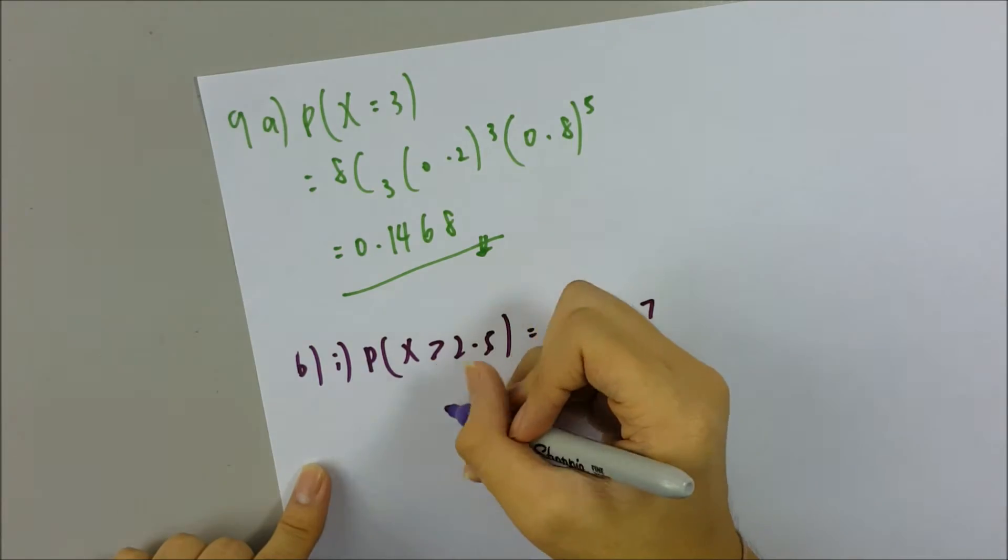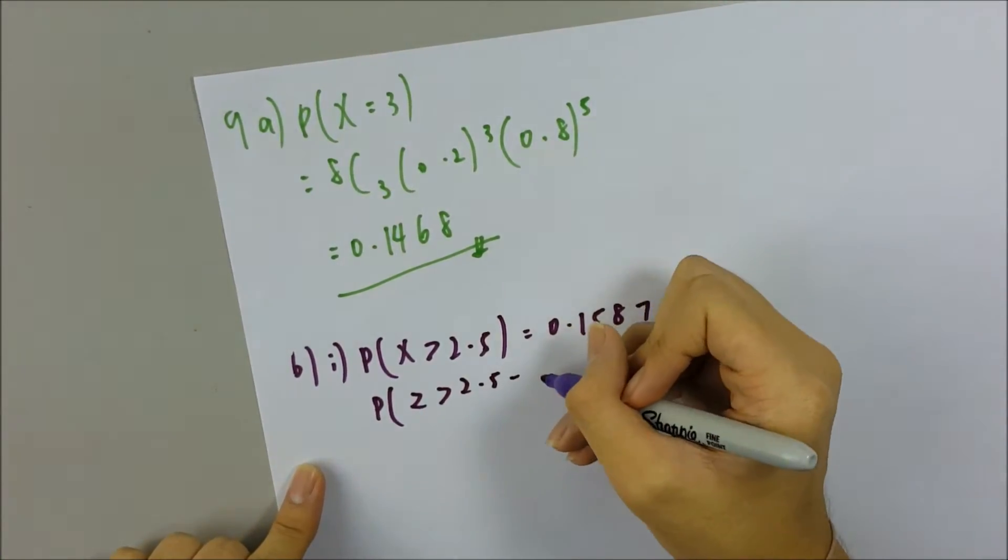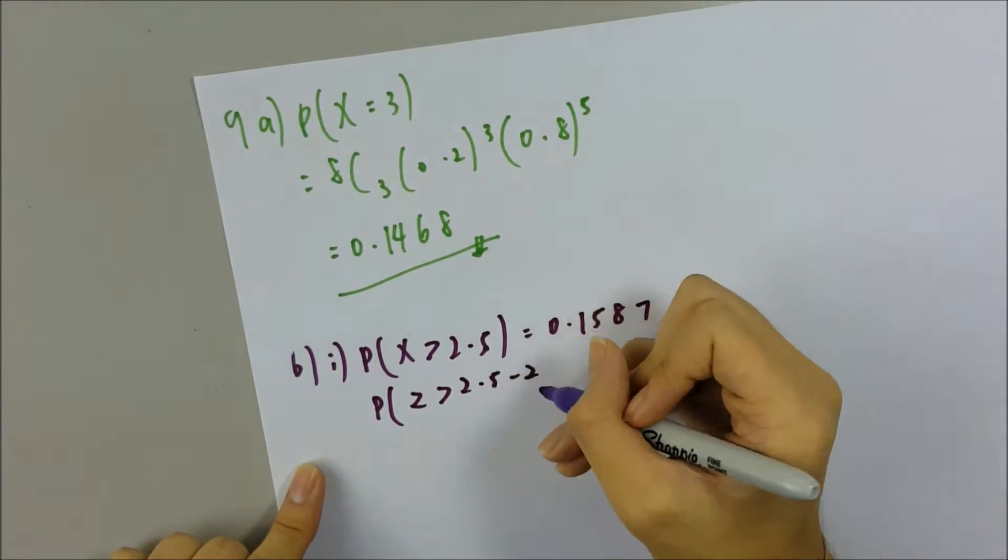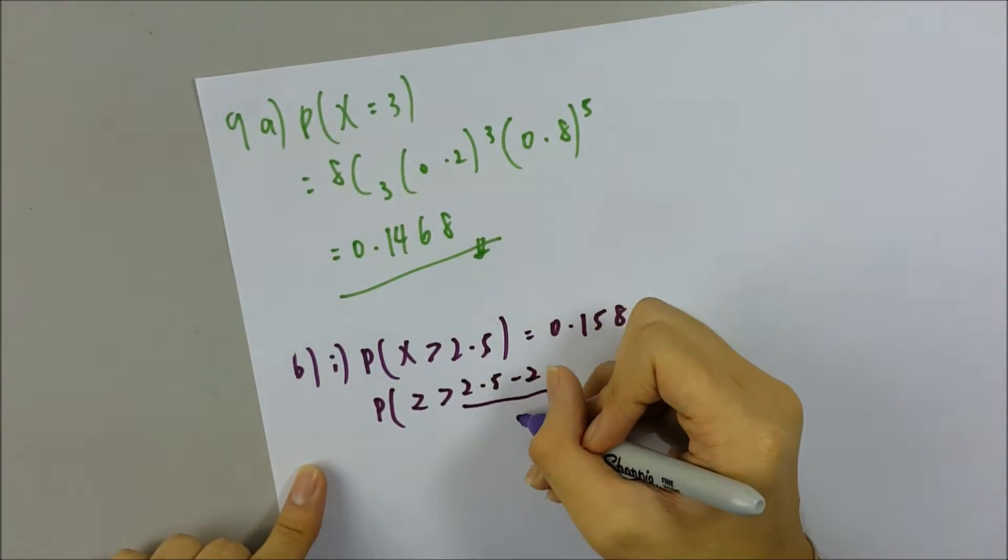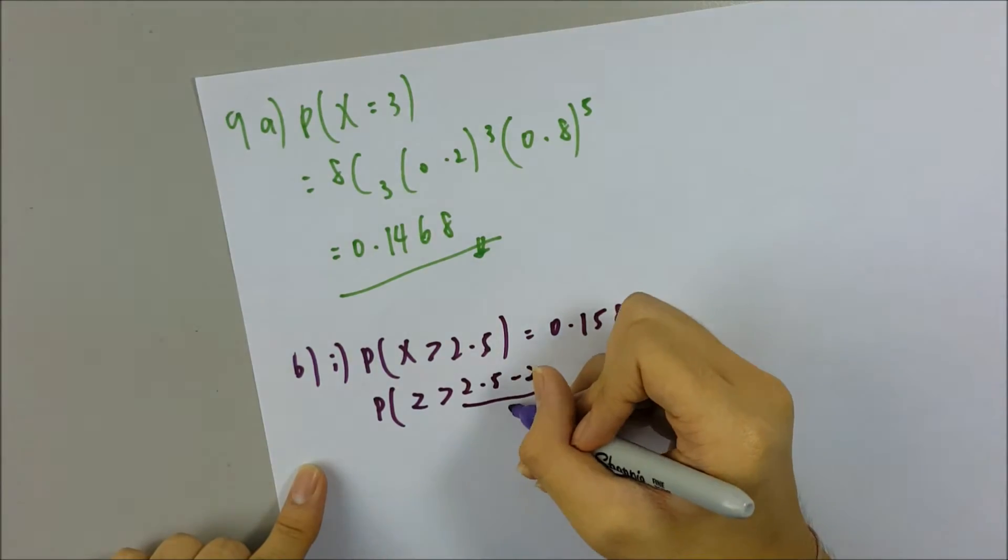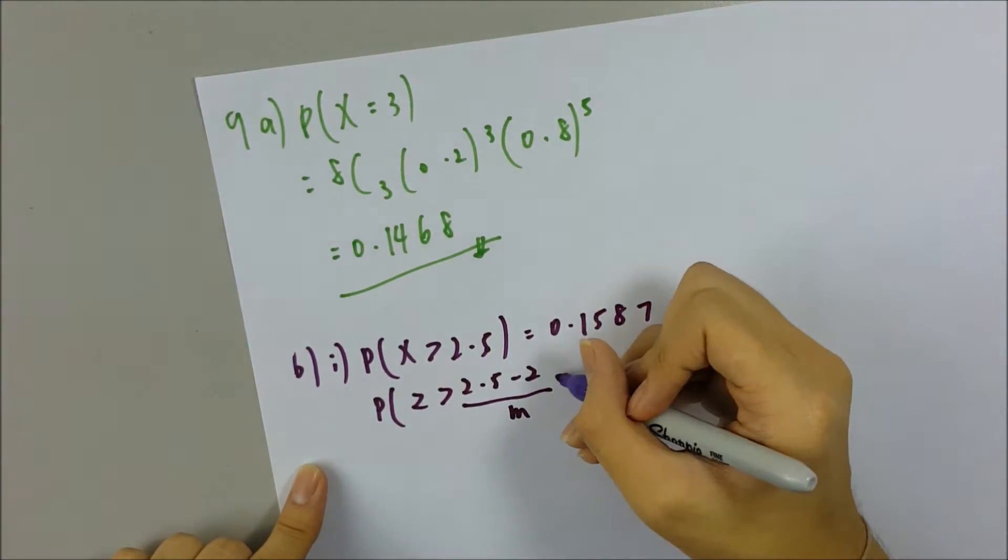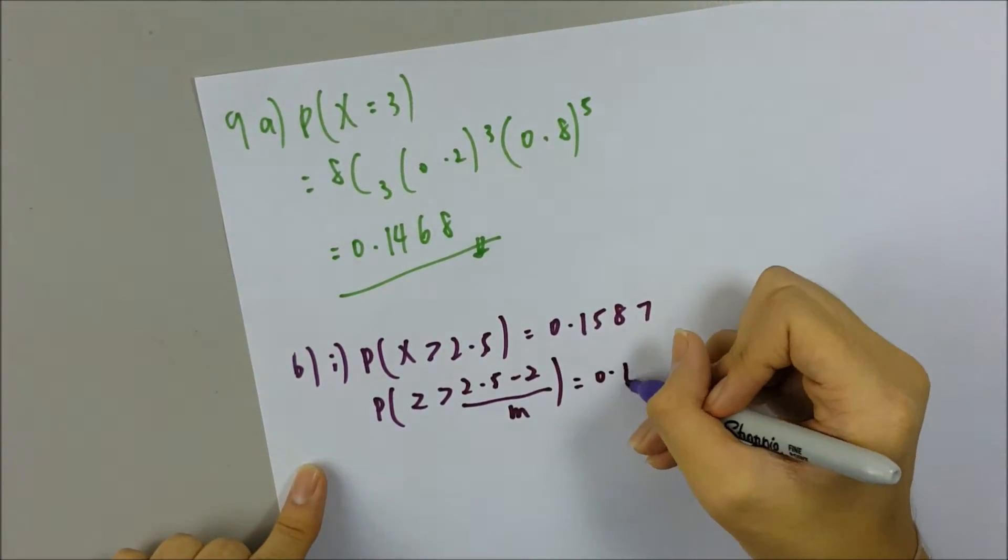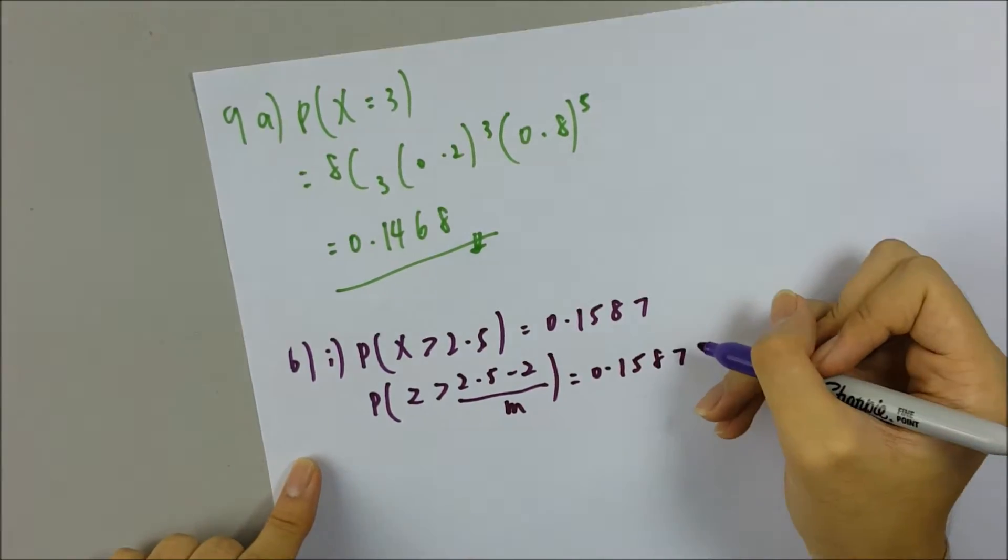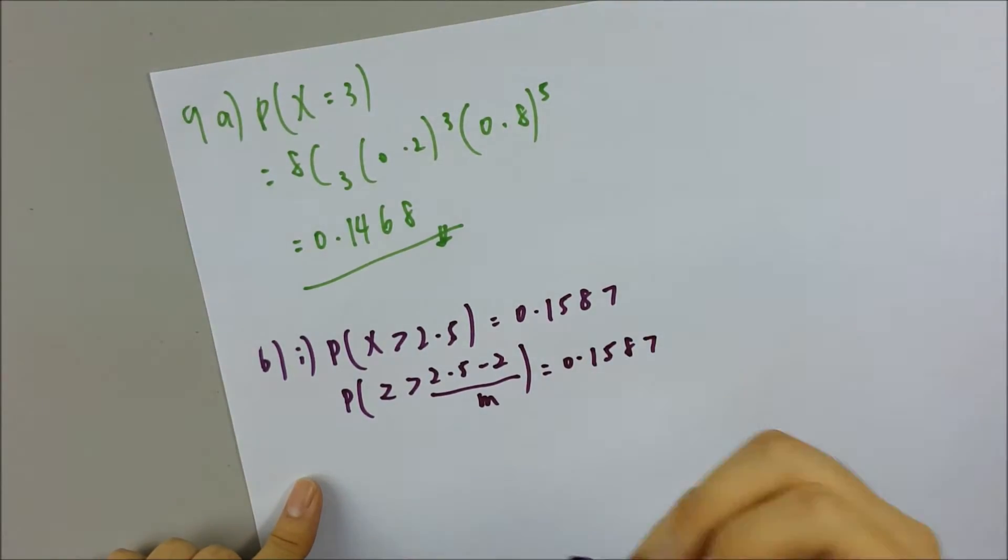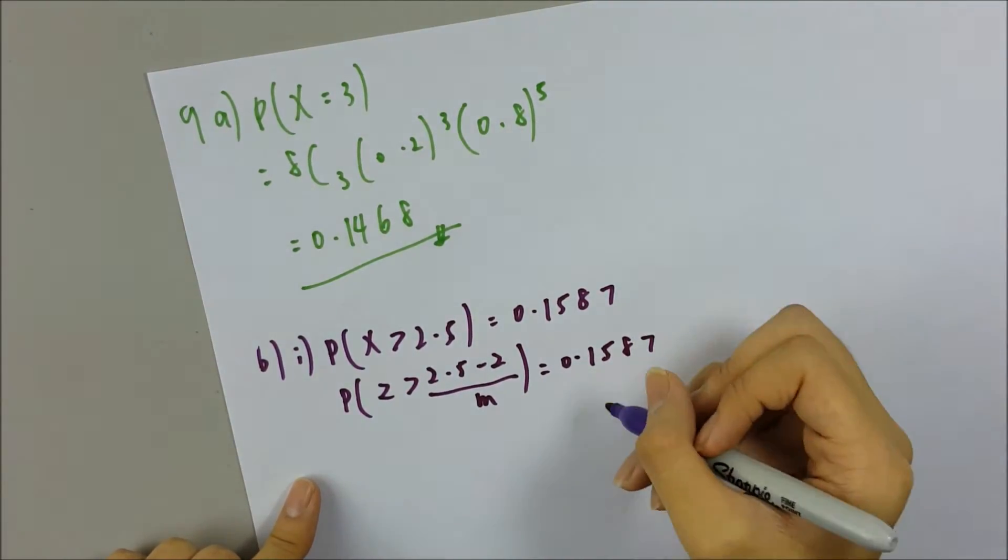So P(Z > (2.5 - mean) / standard deviation). The mean is given as 2, and the standard deviation M is what we want to find out. So P(Z > (2.5 - 2) / M) equals 0.1587. And then from table 1, it equals 0.1587.